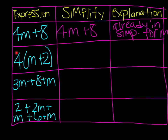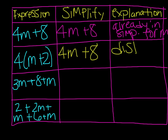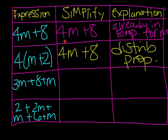Now let's look at 4 times the quantity m plus 2. How can I simplify this? I can use the distributive property: 4 times m is 4m, and 4 times 2 is 8. So that gives me 4m plus 8. Are these two expressions equivalent? Yes — 4m plus 8 and 4 times the quantity m plus 2 are equivalent expressions. Even though they look different, they simplify to the same expression.